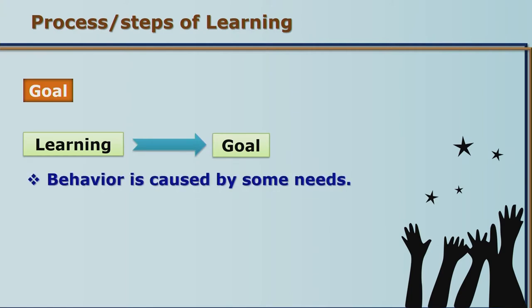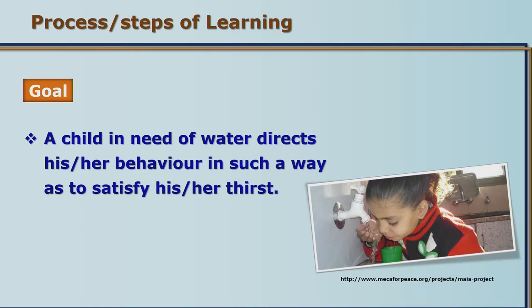Our behavior is driven by certain needs — basic needs like clothing and shelter, or higher-order psychosocial needs. Generally, once basic needs are satisfied, we strive for higher-order needs. Consider a child who is very thirsty — the child will look for water, and all efforts go toward finding it. Once the child quenches the thirst and satisfies the need, only then can the child attend to other needs. Therefore, the goal in front of us becomes the prime one for us to reach.